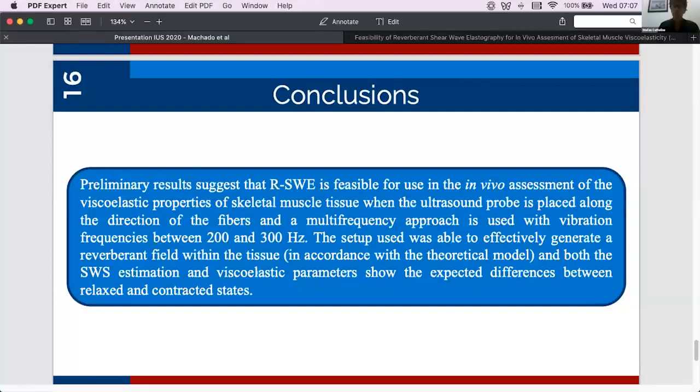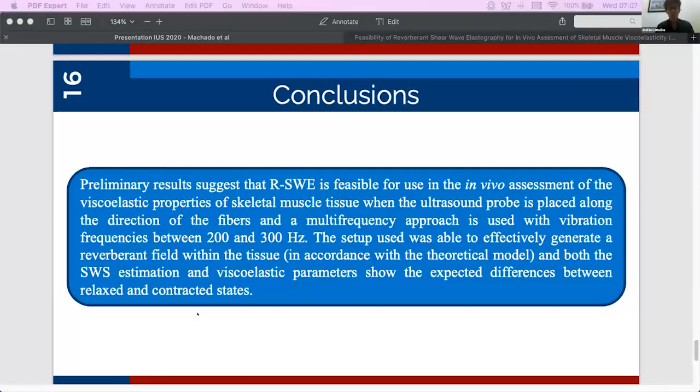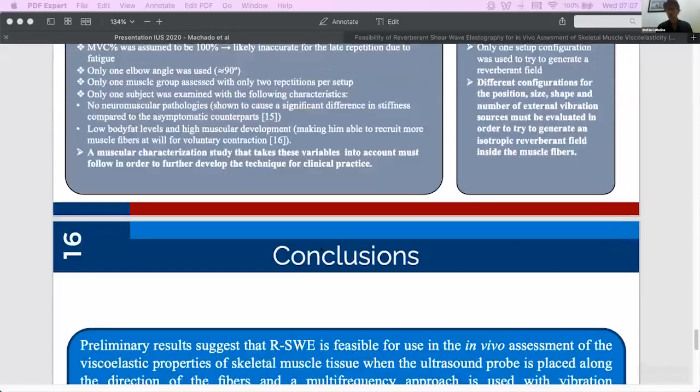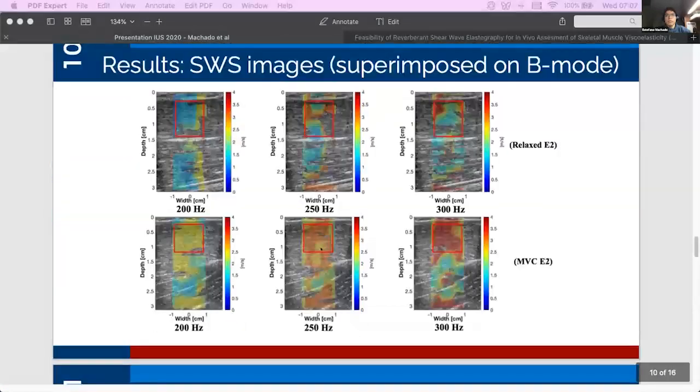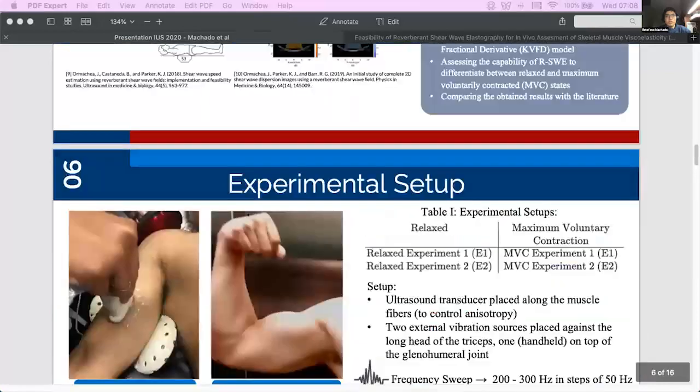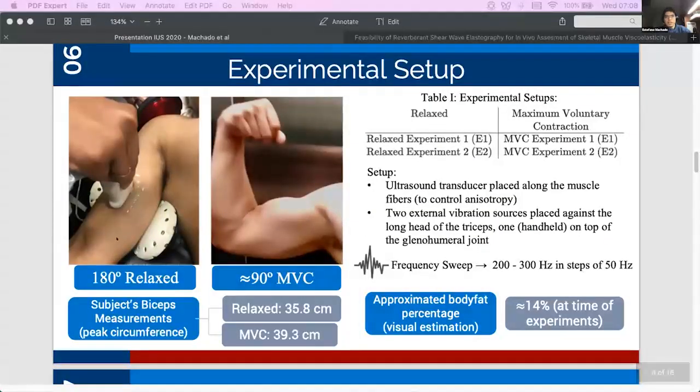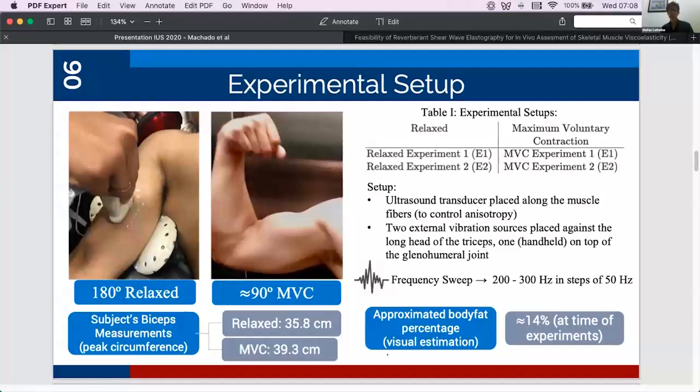Maybe, if you want a question, we should complete here, okay? So, we have time for one quick question. Anybody? Okay. I have, of course. This is interesting. So, you're using only one single vibration source in your experiment, if I understood correctly? No, we are actually using three because we need multiple vibration sources to generate a reverberant field. So, we have two of them pressed against the long head of the triceps and one on top of the glenohumeral joint. Okay. All right. Three sources, and then you have reverberation inside the muscles and the bones. Okay. Thank you very much, Stefano.